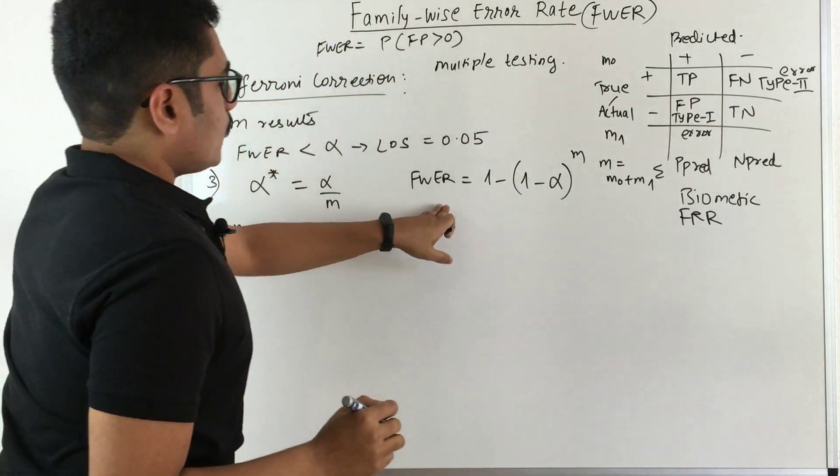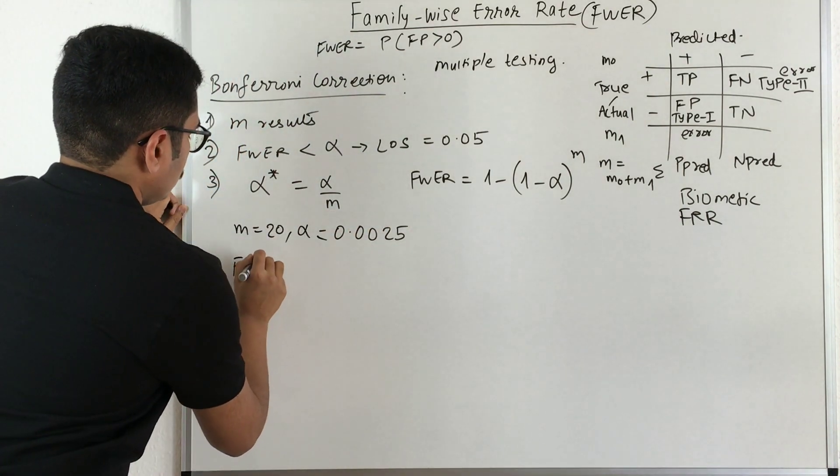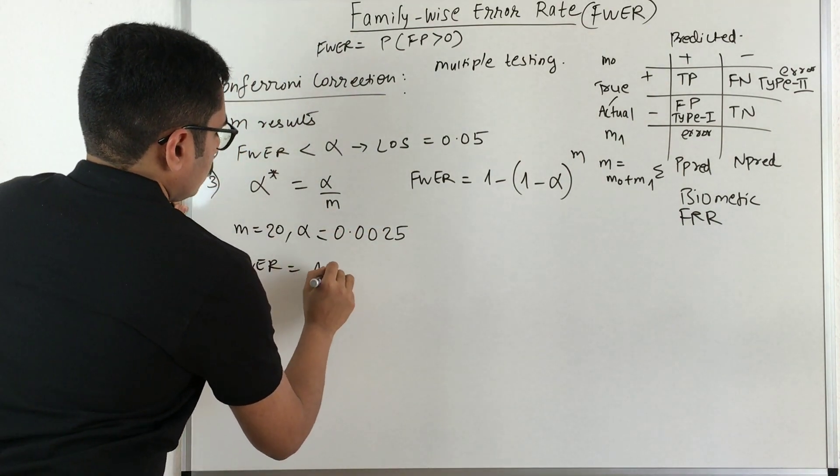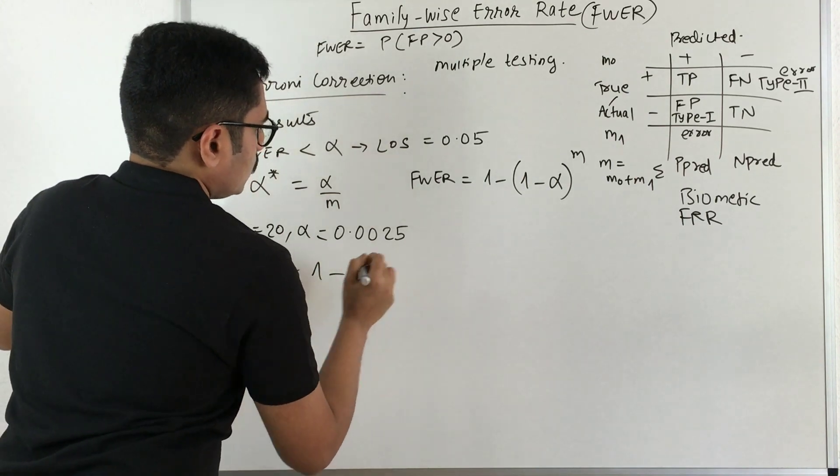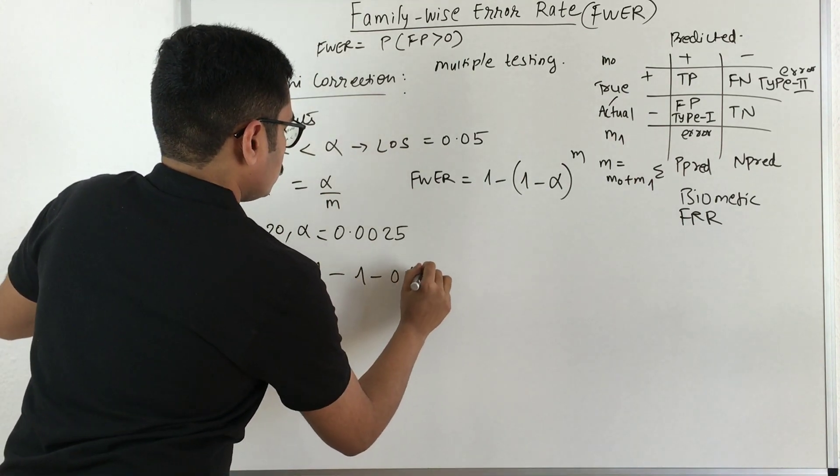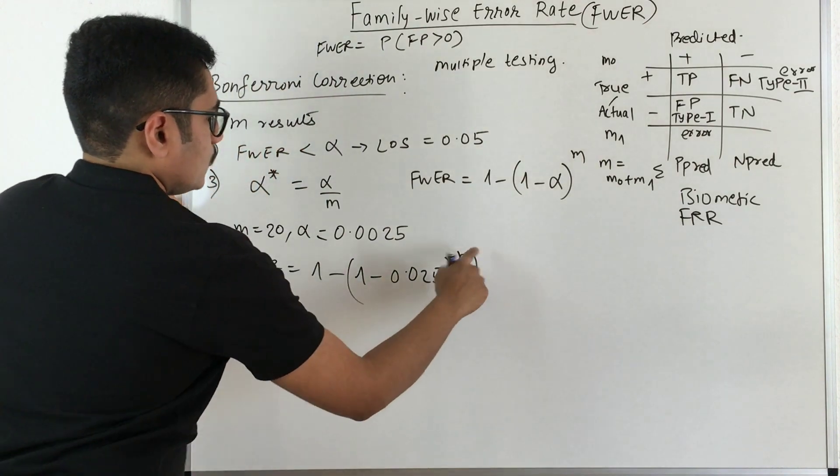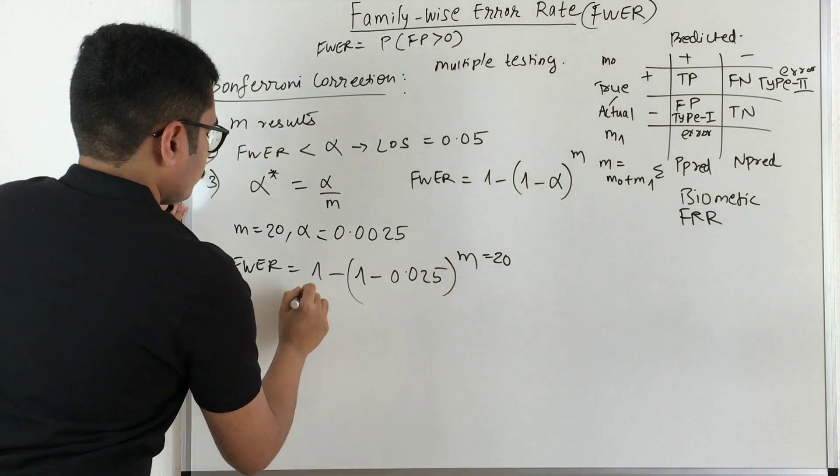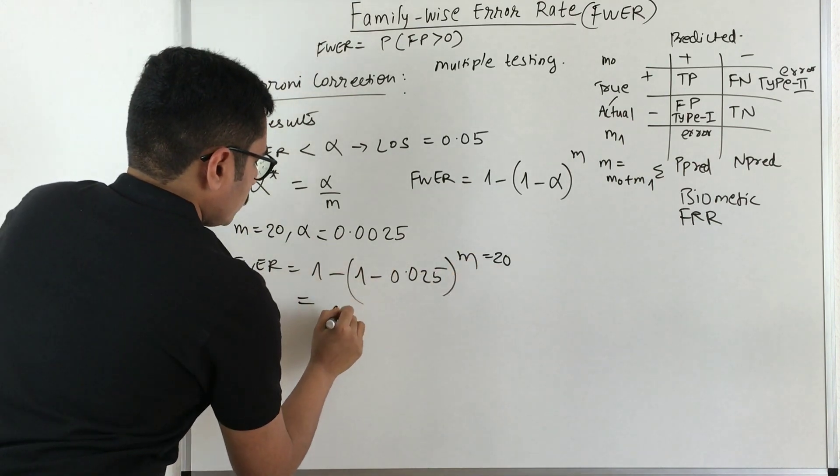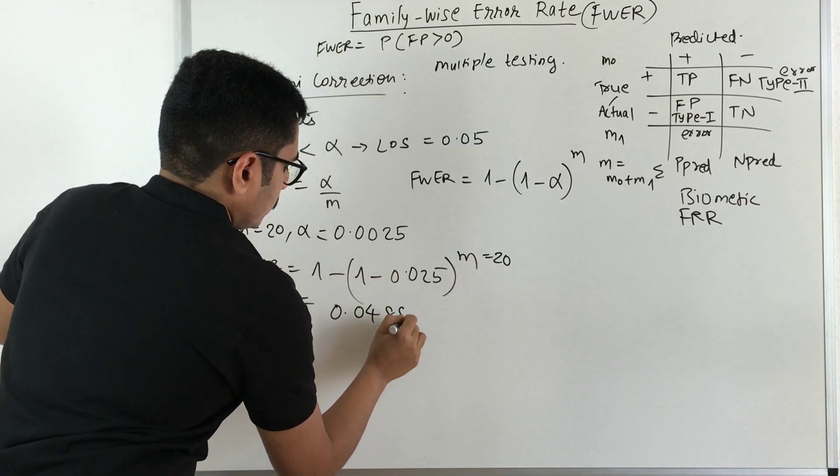Now if we were about to calculate the FWER, then what we would obtain is 1 minus (1 minus 0.025) raised to M, which is equal to 20. The value which we get is 0.04 double 8.